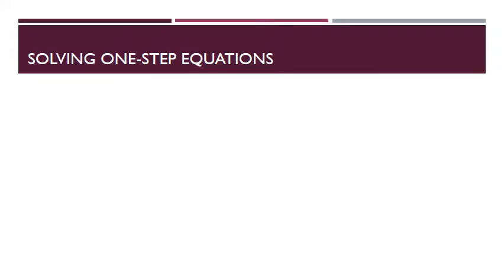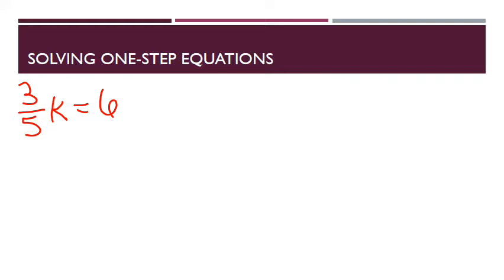Let's continue with solving one-step equations by multiplication and division. These first examples come from Example 3, which I believe is on page 85 — also the guided practice problems at the bottom of the example. So let's go: we've got three-fifths k equals 6. What are we going to do with this dreaded fraction in front of the variable?